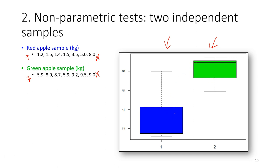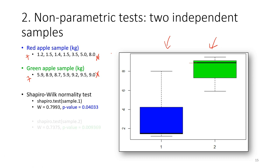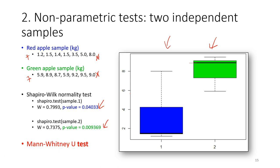Before choosing a statistical test, I need to test the assumptions first. I have to perform a normality test as shown in the previous lecture, and also perform the homogeneity of variance test. The result shows that both datasets are not normally distributed because the p-value is smaller than 0.05, so we reject the null hypothesis. This means the data does not come from a normally distributed population, so we cannot use the two-sample t-test. We need to use a non-parametric test: the Mann-Whitney U test.